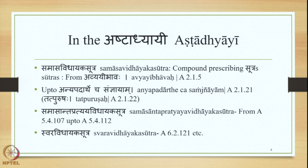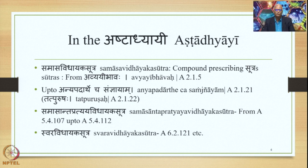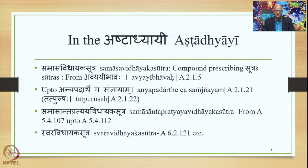Incidentally, A.2.1.22 is Tatpurushaha, and from 2.1.22 onwards the compound-prescribing Sutras related to the Tatpurusha Samasa are stated, and we have studied them in the first course on Samasa in this series. The Samasaanta Pratyaya Vidhayaka Sutras — the Sutras which prescribe a suffix at the end of the Samasa — are stated, as far as Avyaibhava Samasa is concerned, in a small section from 5.4.107 up to 5.4.112. The Sutras prescribing the accent of the Avyaibhava Samasa are stated in 6.2, notably 6.2.1.21 etc. This is how Avyaibhava Samasa is treated in the Ashtadhyayi.